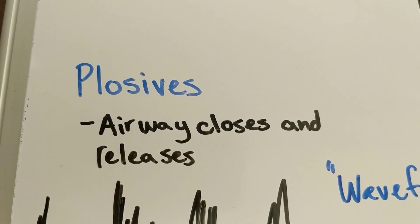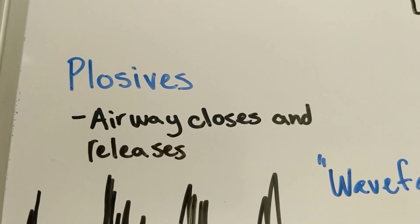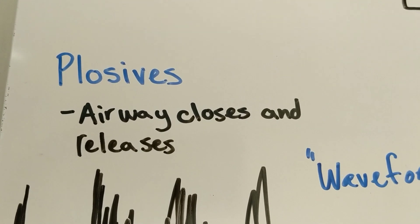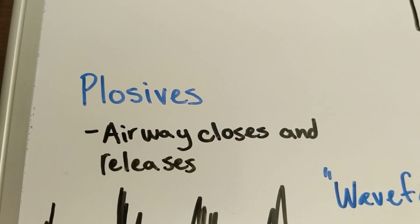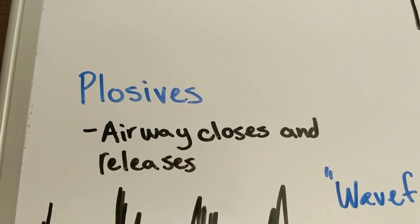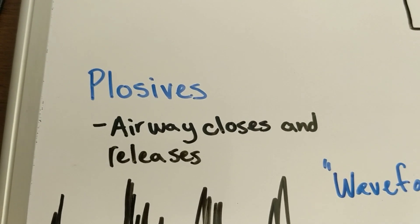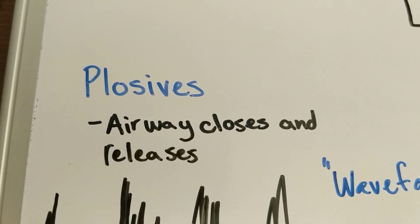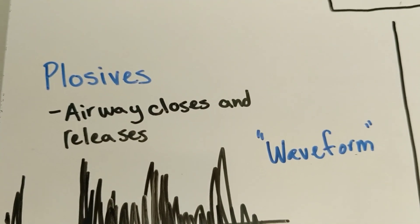We'll go through these more in depth when we start talking about production. But for right now, these are a type of sounds where the sound is cut off temporarily and then reintroduced. One of the things that a child will have to figure out is how long you cut off that sound when you're producing a plosive in the language that the child's learning.